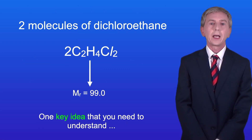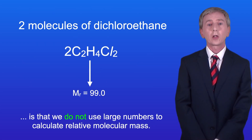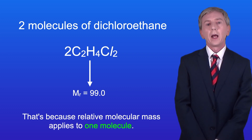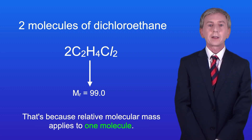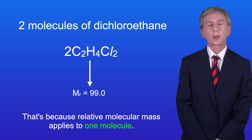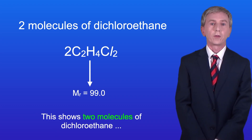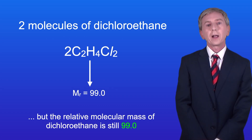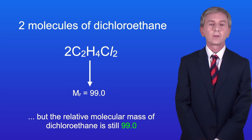One key idea you need to understand is that we do not use large numbers to calculate relative molecular mass, because relative molecular mass applies to one molecule. So even if we show two molecules of dichloroethane, the relative molecular mass of dichloroethane is still 99.0.